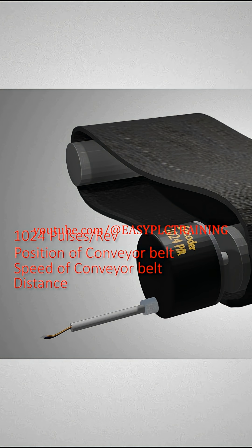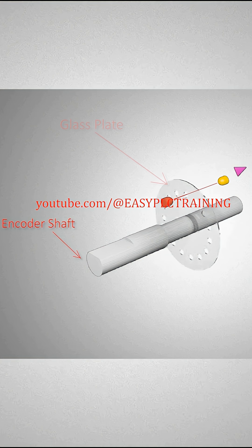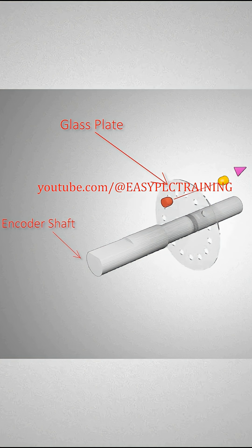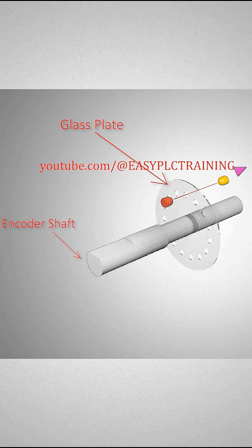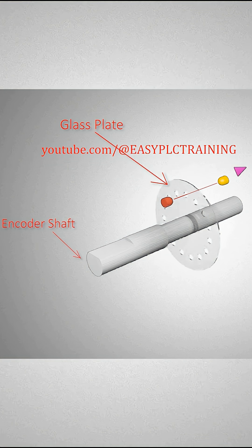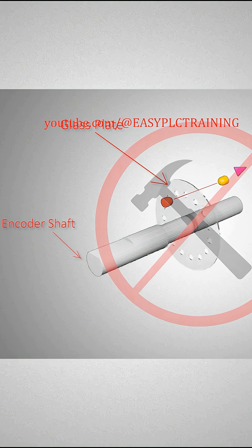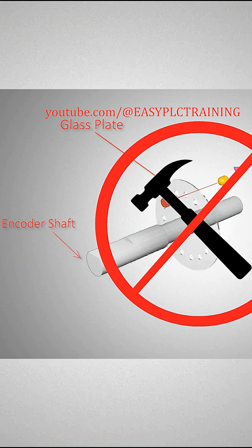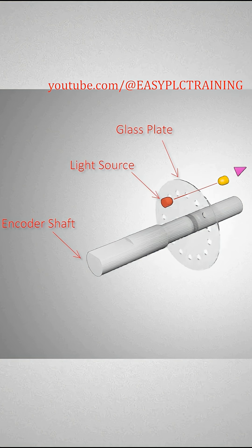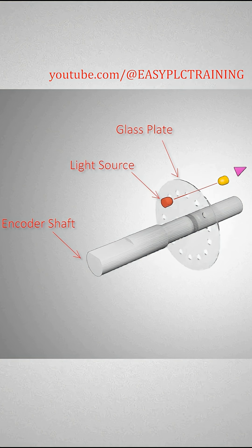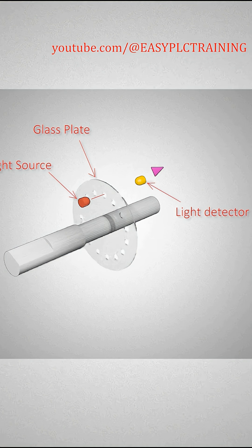If we remove the back cover of the encoder, you will find a glass plate connected to the shaft. This glass plate has a circular array of small holes on it. This glass plate is very fragile. If you ever need to remove the encoder from the shaft of a motor, never use a hammer or force to remove it, as it can damage the glass plate.